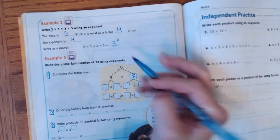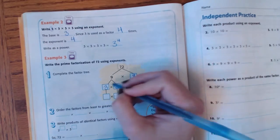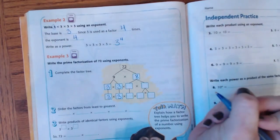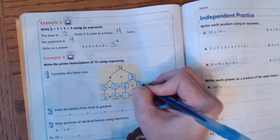Nine can be broken down into three times three. And three and three are both primes, so I'm just going to bring them on down here.